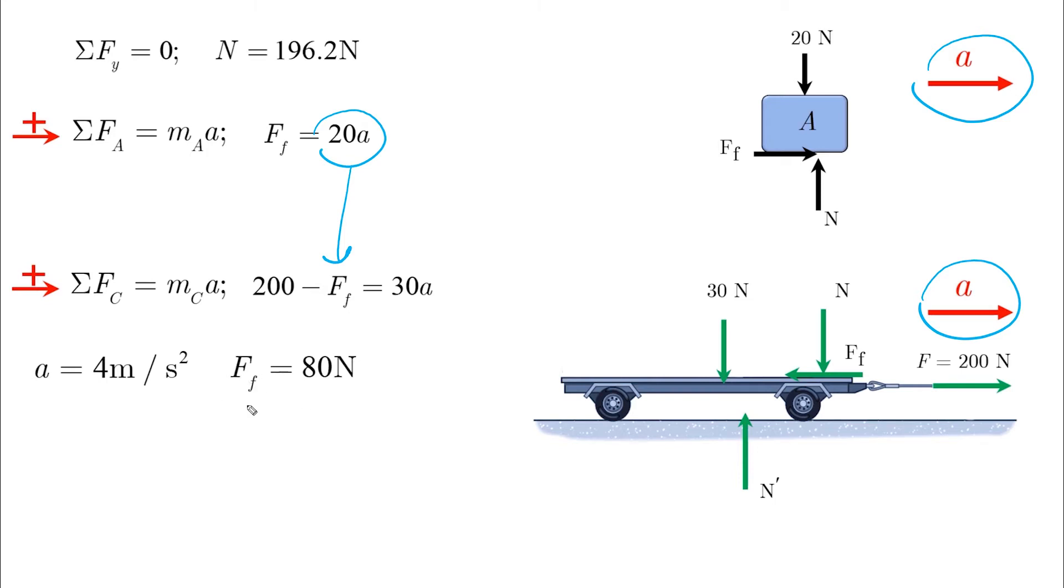Finally, we find the maximum static friction between the surfaces, which is equal to μs times N. And note that N here is N between the two surfaces. It has nothing to do with N prime, which is for the cart.